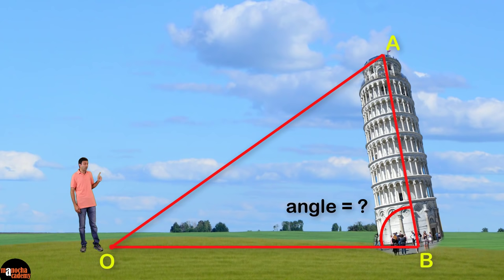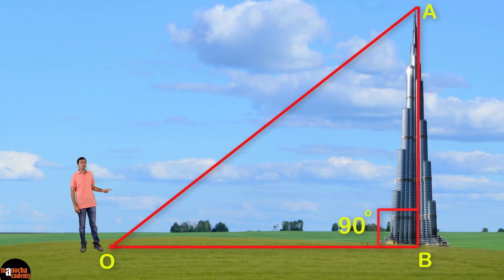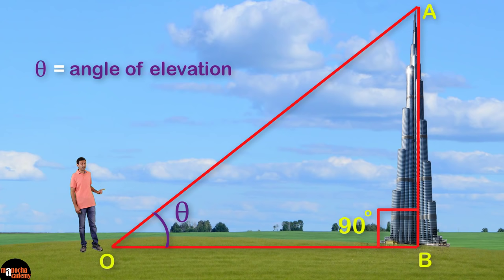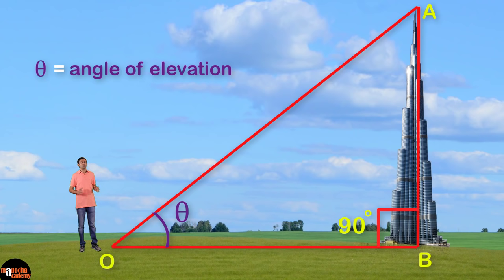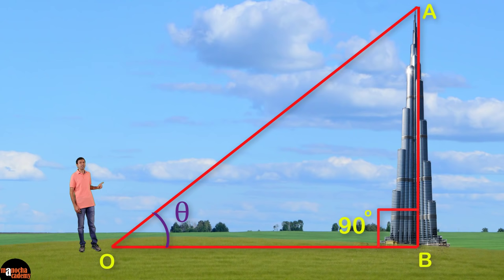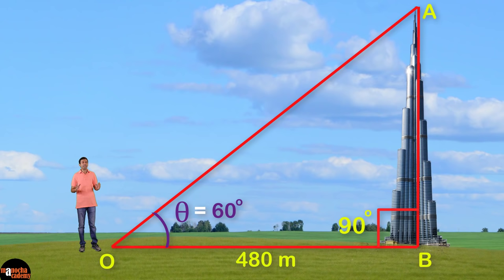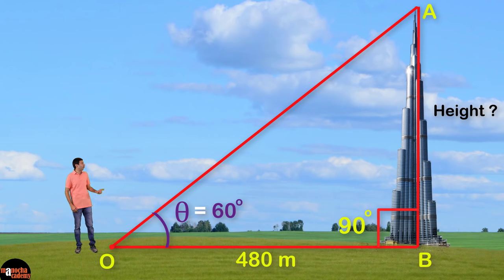But let's say instead of Burj Khalifa this was the Leaning Tower of Pisa — would angle B still be 90 degrees? No. We can apply this only for buildings that are standing straight. Now this angle — the angle between line OA and line OB — is called theta, the angle of elevation. We can measure this angle using a surveying instrument. Let's say the angle theta was 60 degrees, and the distance from O to the base of the building B was 480 meters.